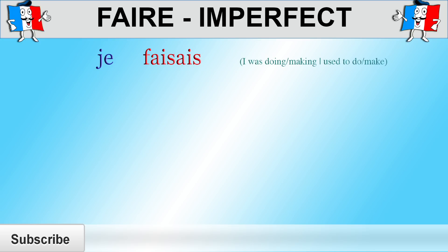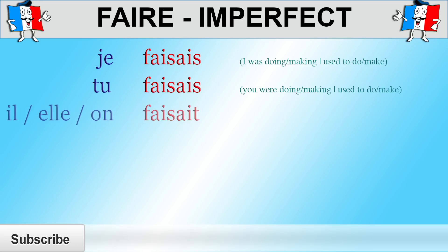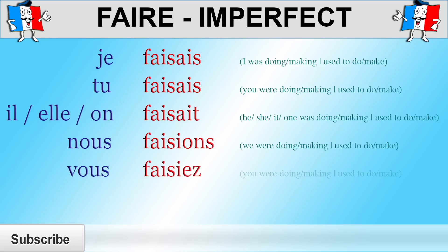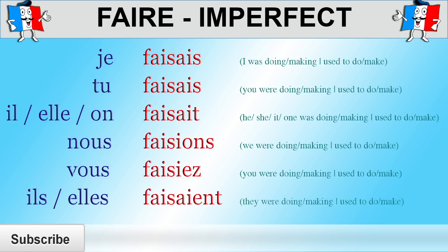Je faisais, which can mean either I was doing, I was making, I used to do, I used to make, or even I did, I made. Tu faisais. Il faisait. Elle faisait. On faisait. Nous faisions. Vous faisiez. Ils faisaient.